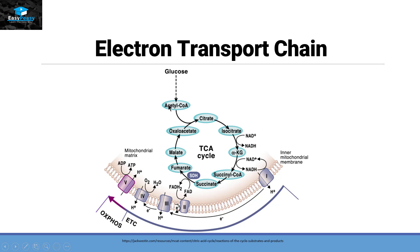In this picture, glucose is converting itself into acetyl-CoA, and this acetyl-CoA enters the Krebs cycle, or TCA cycle. TCA stands for tricarboxylic acid, which is the other name of the Krebs cycle. From this Krebs cycle, we have two different types of electron carriers that enter the electron transport chain. The first carrier is NADH and the second carrier is FADH2. They are carrying both electrons and H+ ions.